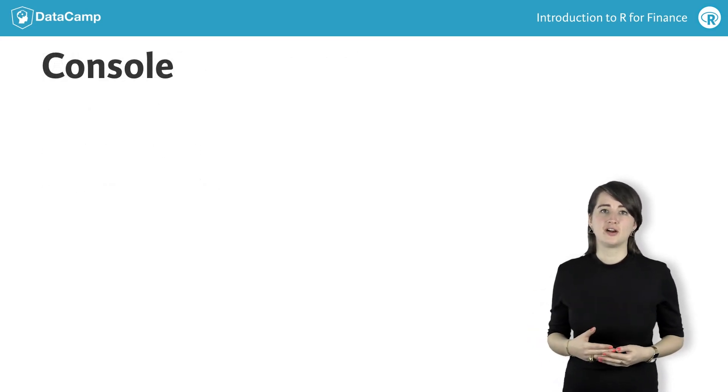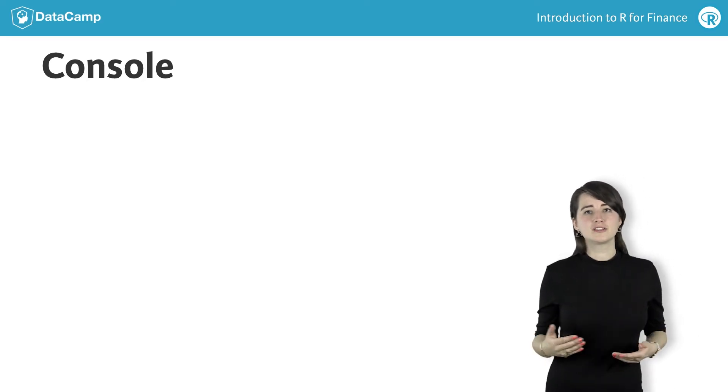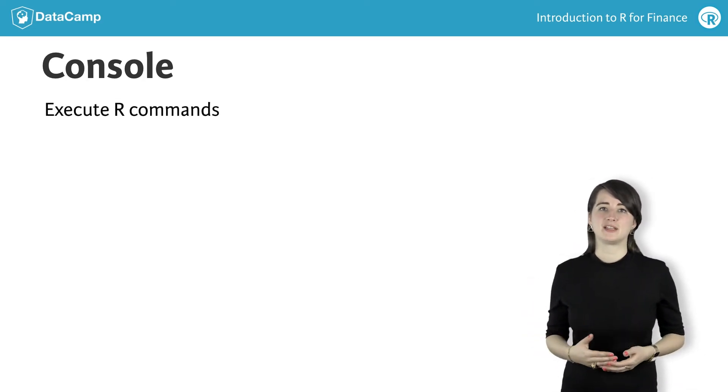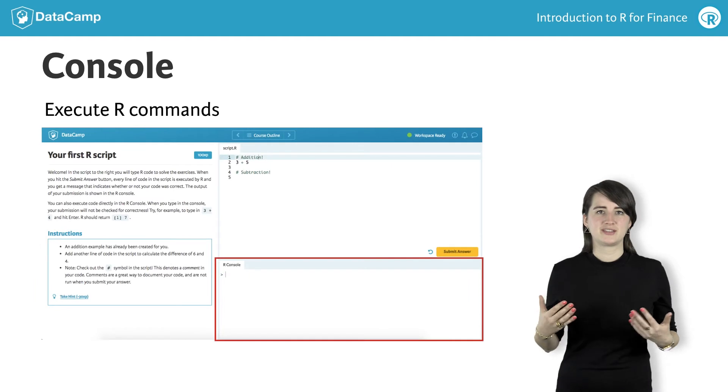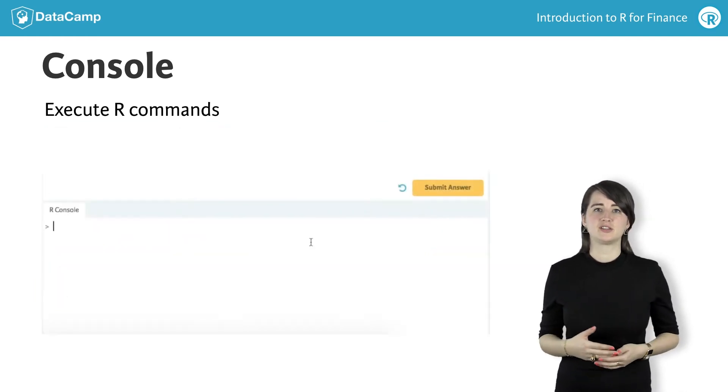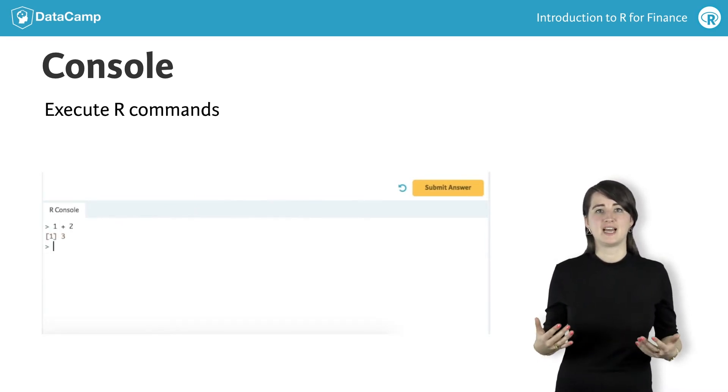An important component of R is the console. The R console is where you can execute R commands. In DataCamp's interactive interface, the console can be found here. Let's try to calculate the sum of 1 and 2. We simply type 1 plus 2 at the prompt and hit enter. R interprets what you typed and prints the result. Pretty cool, right?